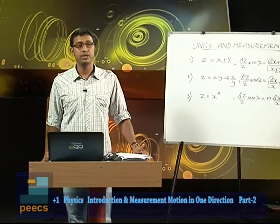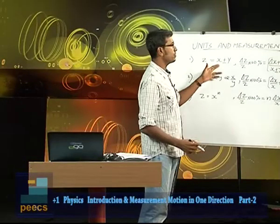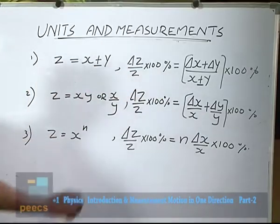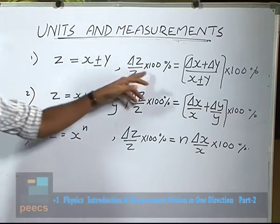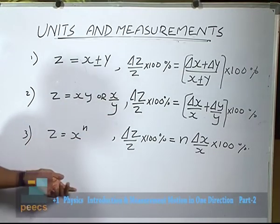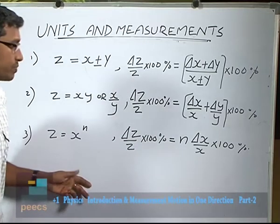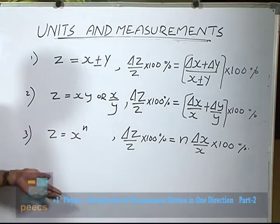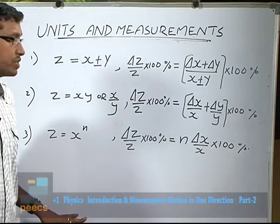After dimensional analysis we discuss errors. The magnitude of the difference between the true value and the measured value is known as error. If A is the true value and ΔA is the mean absolute error, then percentage error = (ΔA/A) × 100%. For combination of errors: if Z = X ± Y, then percentage error in Z = (ΔX + ΔY)/(X ± Y) × 100%. If Z = XY or X/Y, then ΔZ/Z × 100% = (ΔX/X + ΔY/Y) × 100%. If Z = Xⁿ, then ΔZ/Z × 100% = n × (ΔX/X) × 100%.